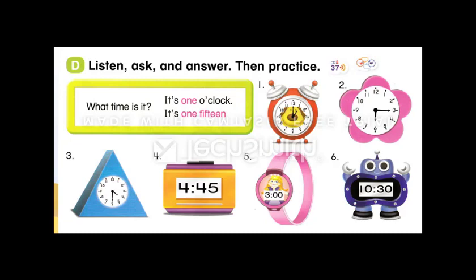1. What time is it? It's 1 o'clock. 2. What time is it? It's 6:15. 3. What time is it? It's 4:30. 4. What time is it? It's 4:45. 5. What time is it? It's 3 o'clock. 6. What time is it? It's 10:30.